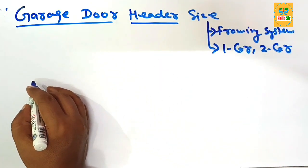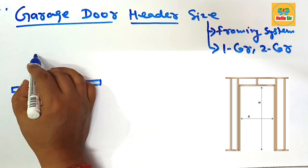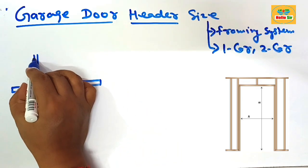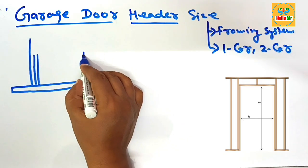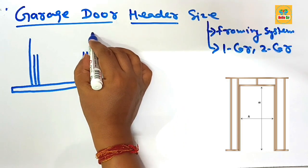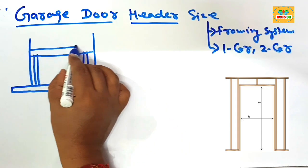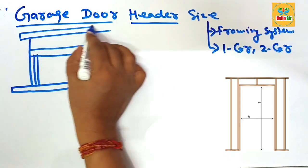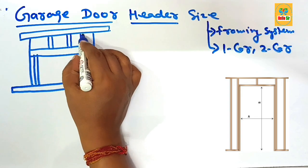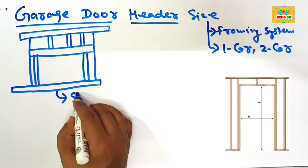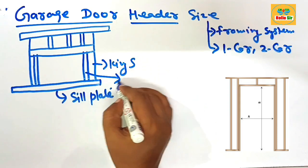First, here we make a rough diagram for the garage door framing system. This one is your bottom plate, also known as the sill plate. These are the two studs known as the jack stud and the king stud. This one is also the stud known as the jack stud and the king stud.